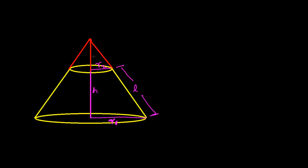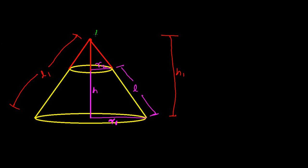After getting this big cone, let l1 be the slanted height of the big cone and h1 be the height of this big cone. Let me name the two cones: the big cone is ABC and the upper smaller cone uses points B' and C', with apex O and O'.